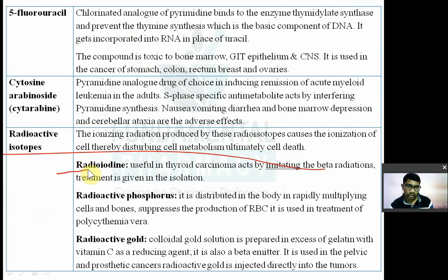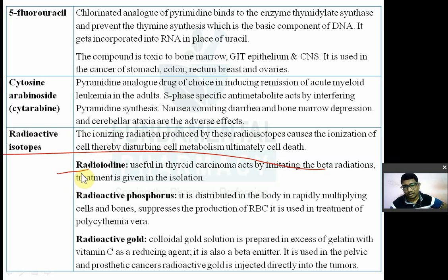Radioactive iodine concentrates in the thyroid gland. Since iodine is concentrated in the thyroid gland, radio-labeled iodine — a radioisotope of iodine — is used in the treatment of thyroid cancer.